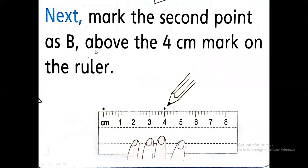Next, mark the second point as B because you want to draw the line four centimeter long. So mark first point here on zero and second point on four so that you can draw a line of four centimeter. So first point will be marked on A and second point will be marked on B because we want four centimeter long line.